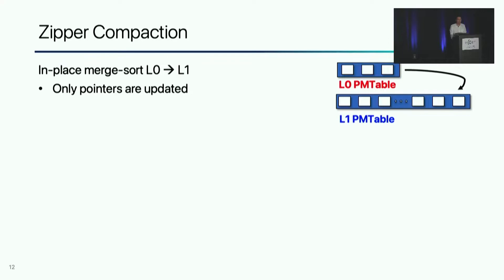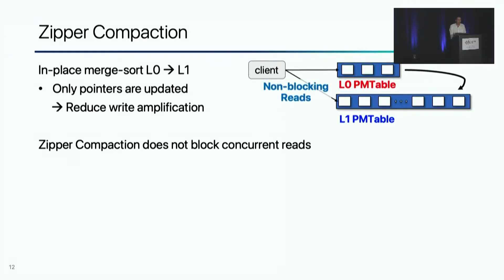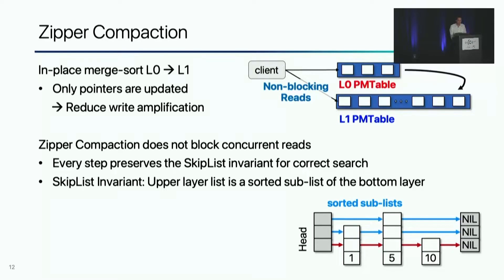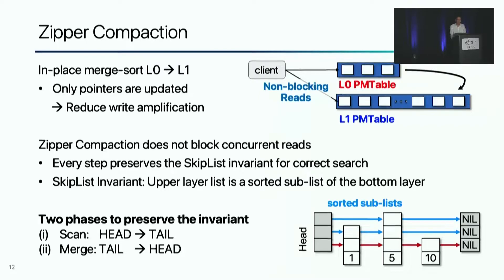The second design of ListDB is zipper compaction. Zipper compaction is an in-place merge sort for two PM tables. It reduces write amplification by updating and persisting only pointers. While zipper compaction is making changes to the two PM tables in place, it does not block concurrent reads, because it preserves the skiplist invariant at every single step. The skiplist invariant is that the list at each upper layer is a sorted sublist of the bottom layer, and as long as the invariant is preserved, correct search results are guaranteed. Zipper compaction works in two phases.